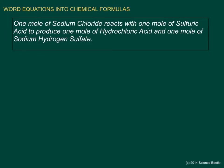We'll begin by looking at the very first item in this sentence. We've got one mole, so we're going to represent that as a number one. Since it is a coefficient, it goes in the front. Then we look at sodium chloride — sodium is a metal, so the symbol for sodium is Na. Chloride is the anion form of chlorine, and chlorine's symbol is Cl.